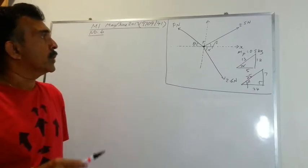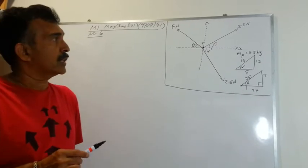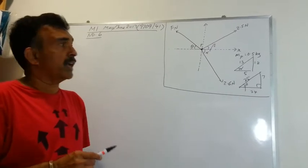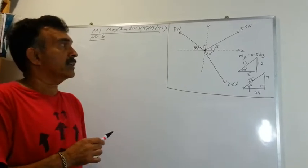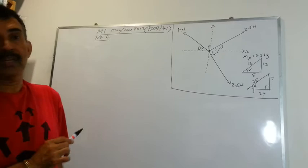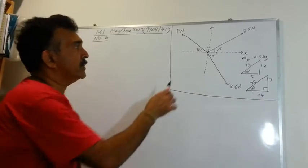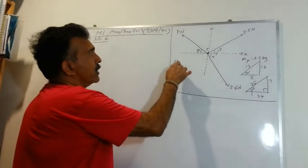So to summarize the question, we are given two forces 2.5 N and 2.6 N and their respective directions, and we are given a third force which is F N acting at an angle theta as shown. We are told that this system is in equilibrium.